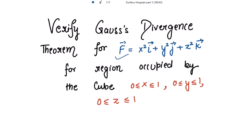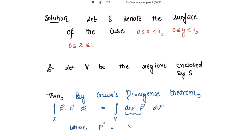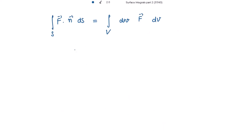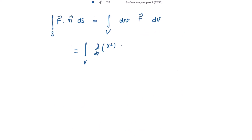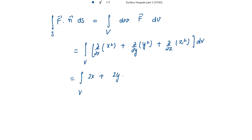f vector is given as x² i plus y² j plus z² k. The divergence of f vector is del/del x of x² plus del/del y of y² plus del/del z of z², which gives 2x plus 2y plus 2z. Taking 2 common, the integrand becomes 2(x + y + z).